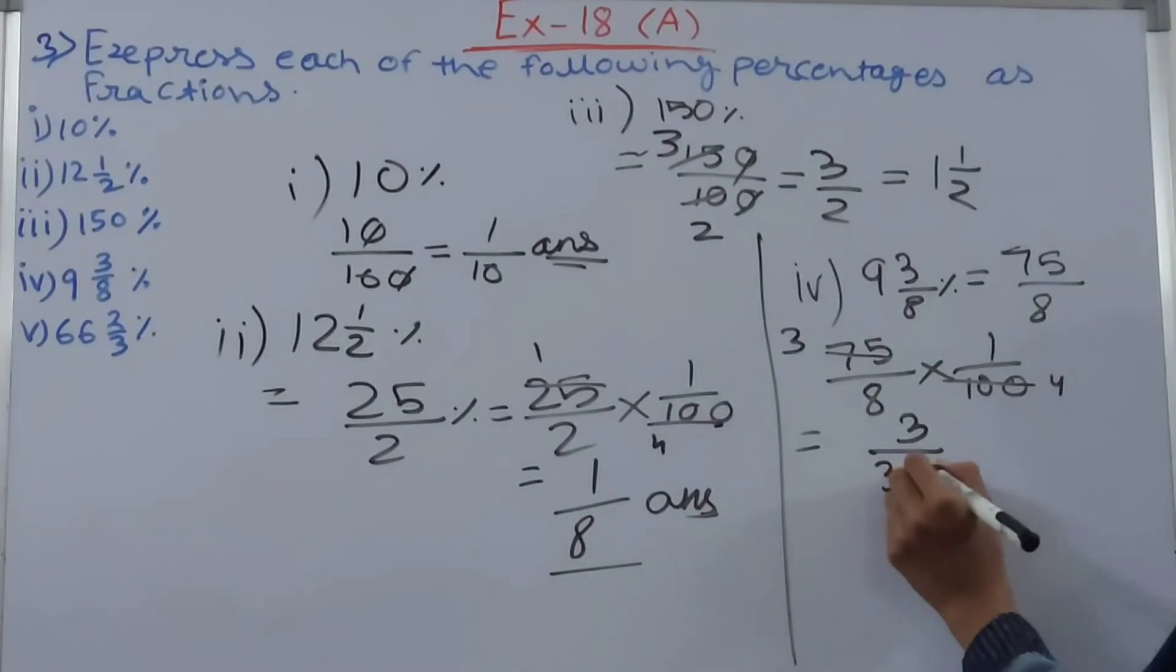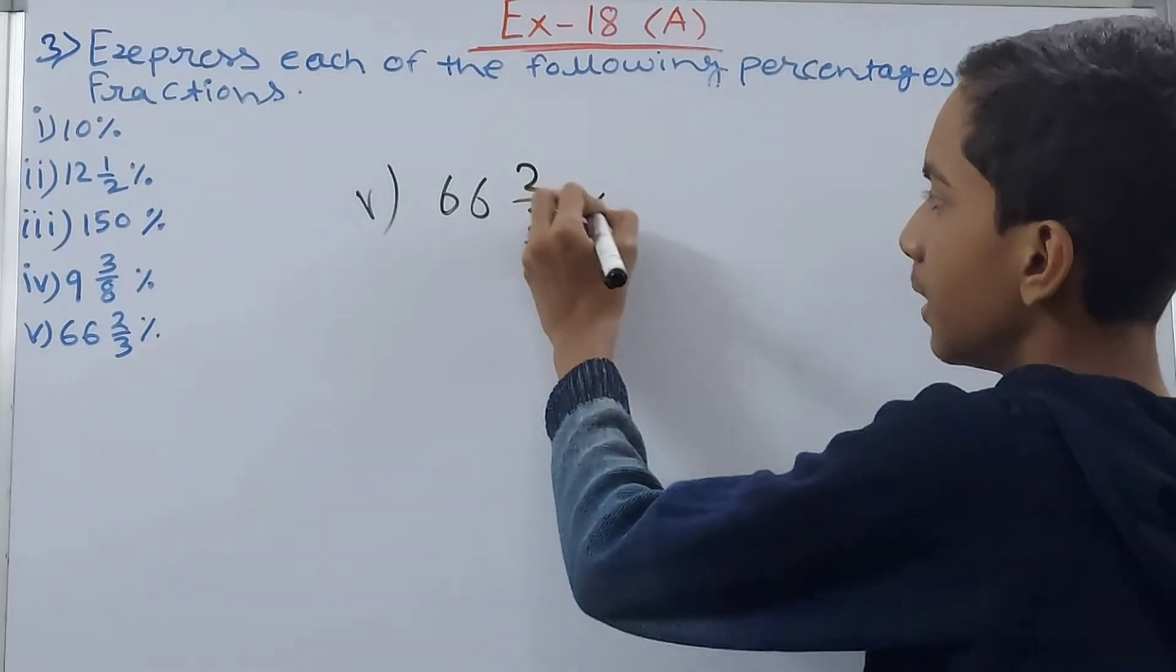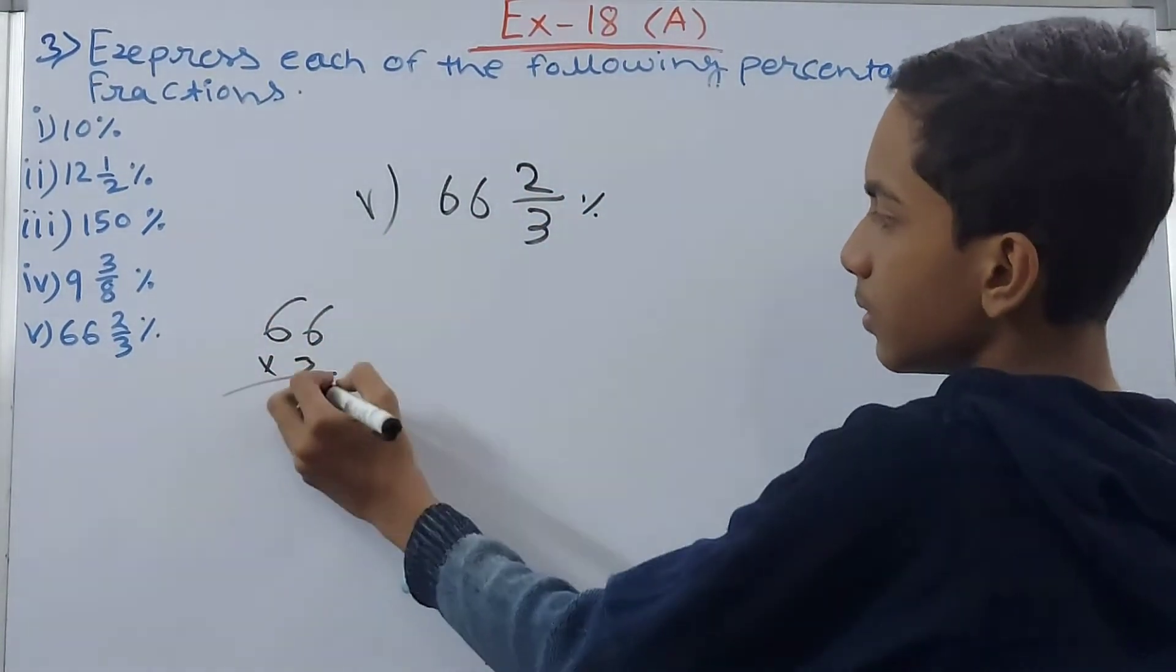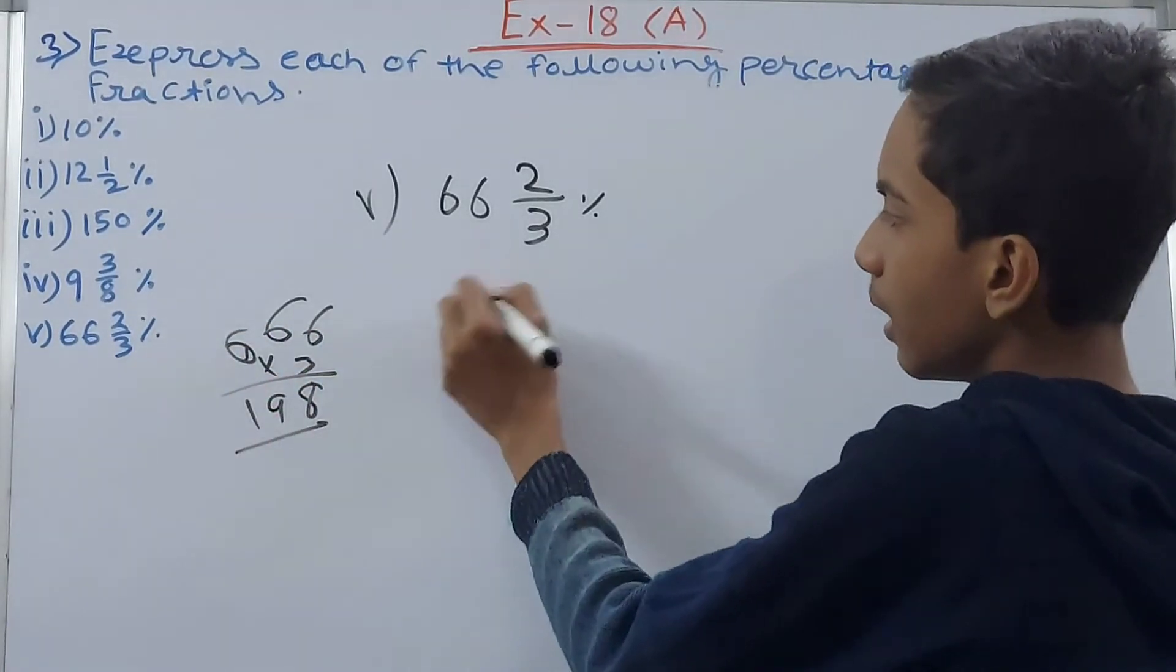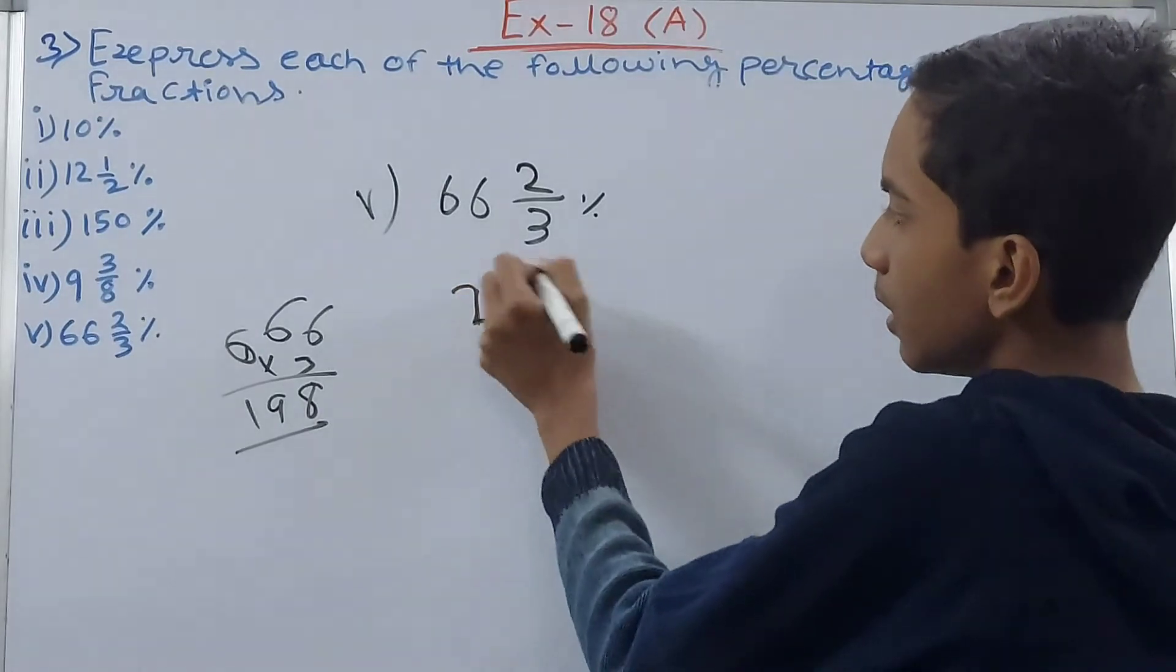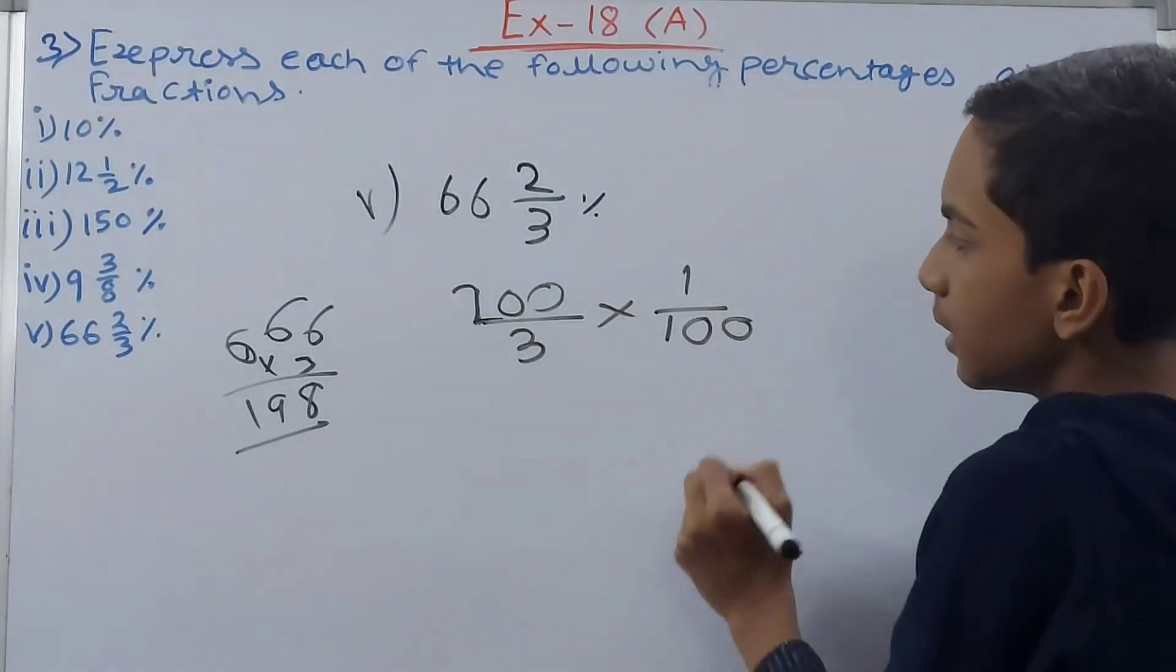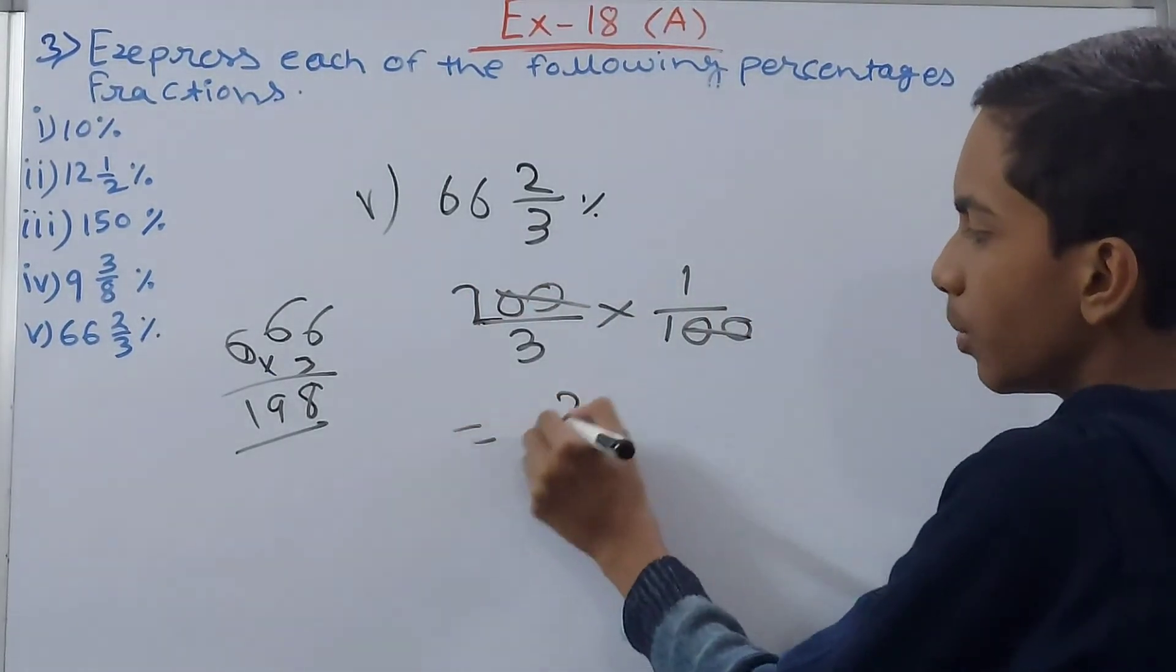So 3 upon 32. 66 whole 2 upon 3 percent, so multiply this, you get 66 into 3 is 198 and plus 2 so 200. 200 upon 3 into 1 upon 100. So what do we get here, cancel this 0, cancel this 0, you get 2 upon 3.